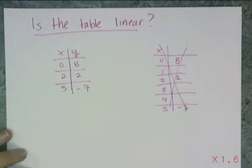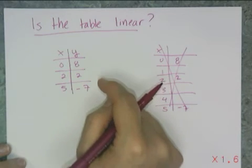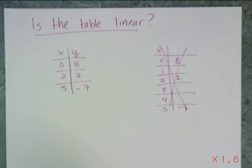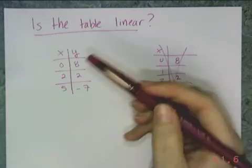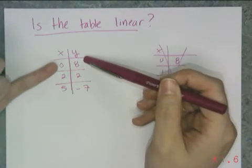I'm going to use the concept that a table that is linear has a constant rate of change. And I'm going to figure out what the rate of change is by calculating the change in y over the change in x. Now you have to figure out the change in y over the change in x of the entire table, not just two data points.